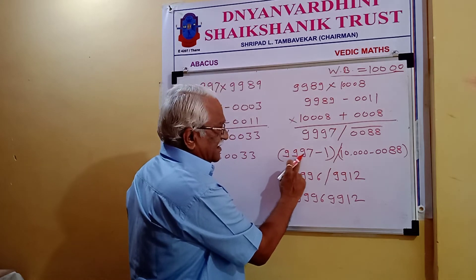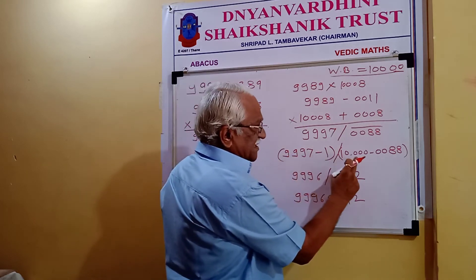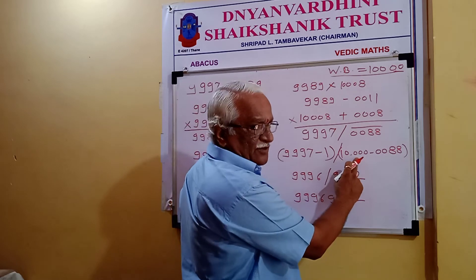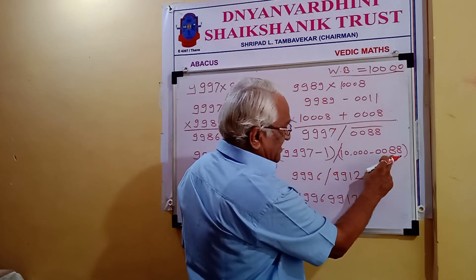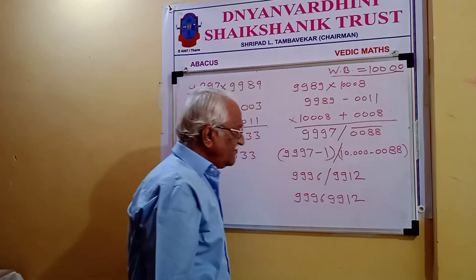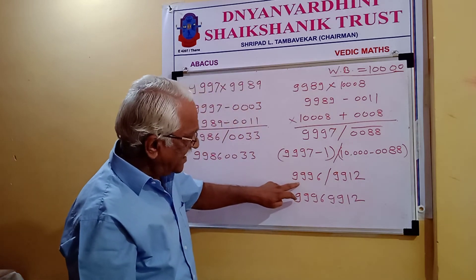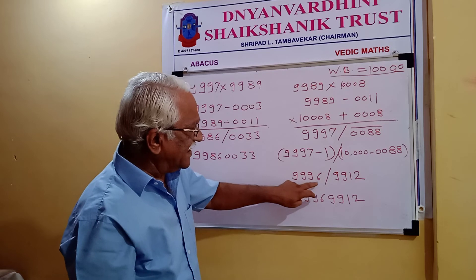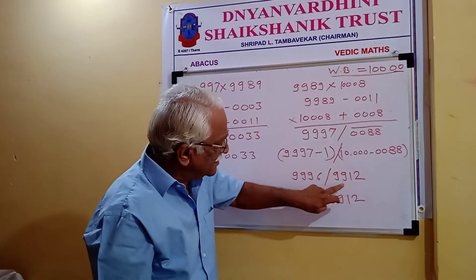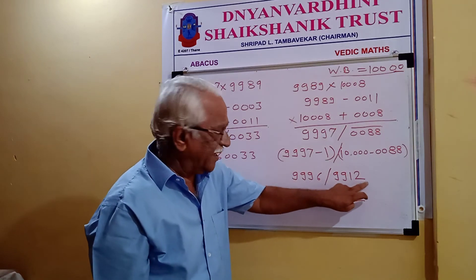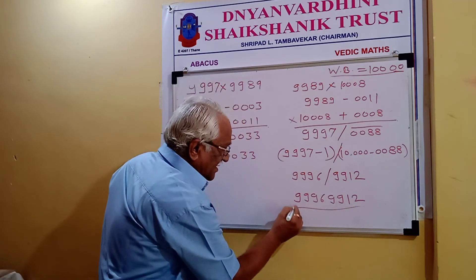So 9,997 minus 1 gives 9,996. And that 1 comes over to the right side in the form of 10,000. So here is our final answer.